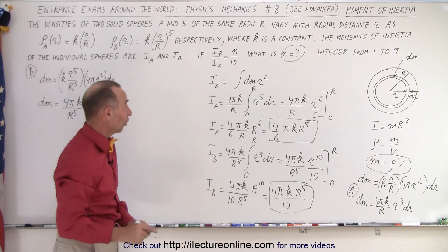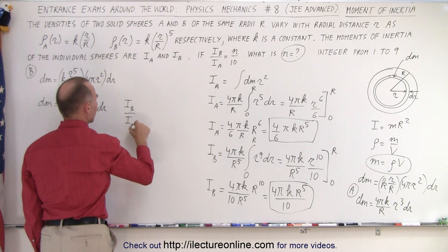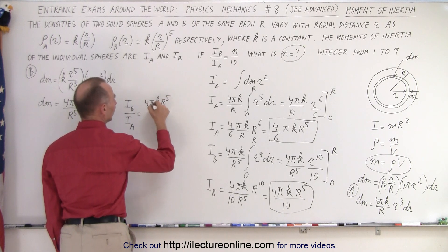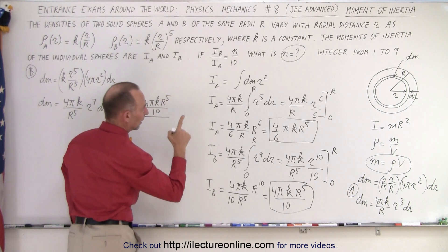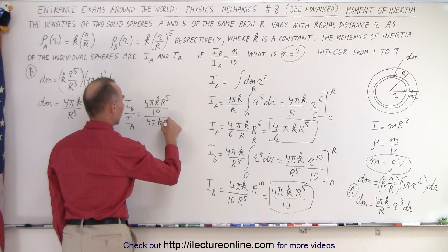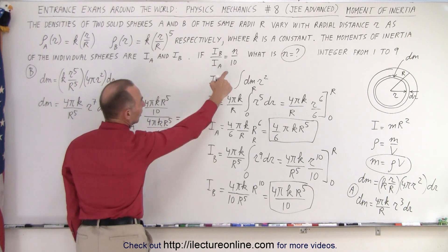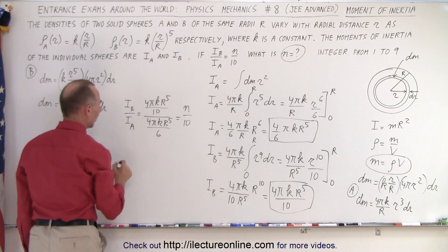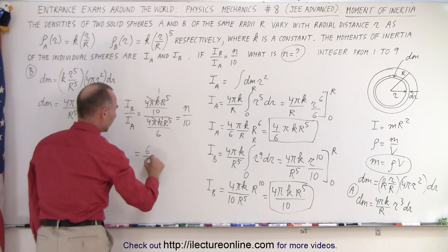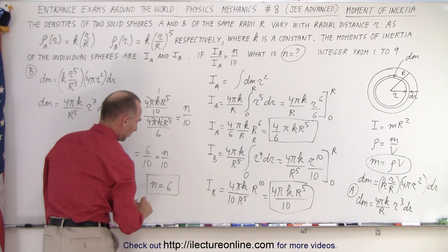Now we find the ratio. IB over IA equals (4πK R⁵ / 10) divided by (4πK R⁵ / 6). The common factors cancel, leaving 6 over 10, which equals N over 10. Therefore N equals 6.